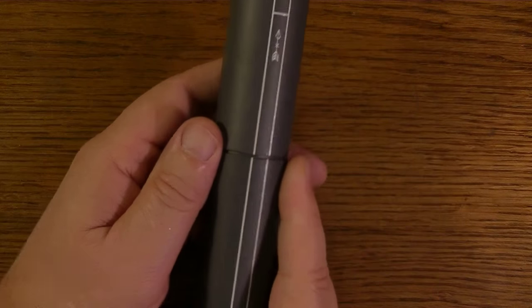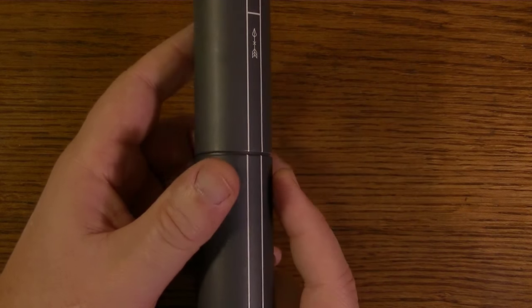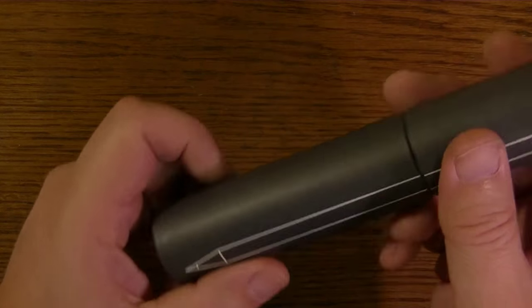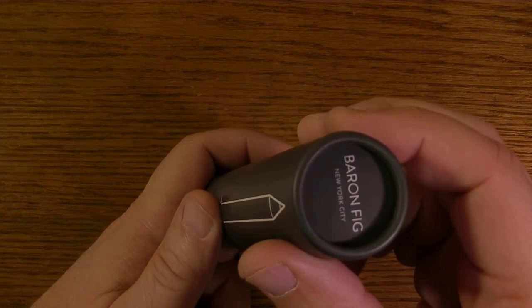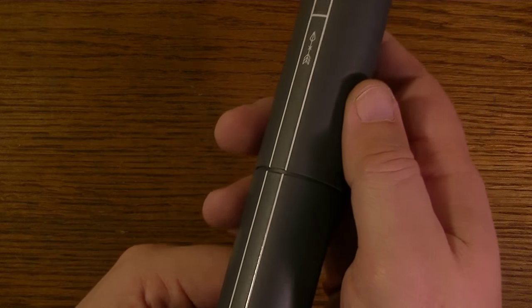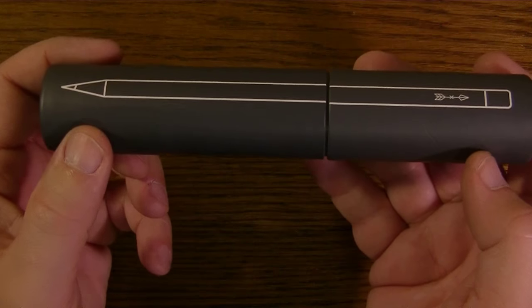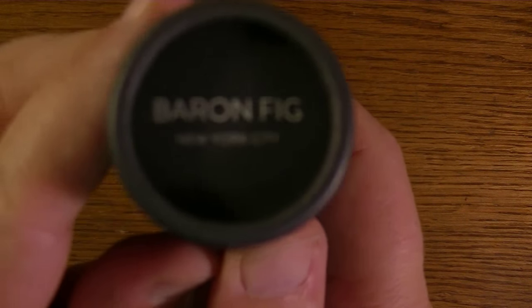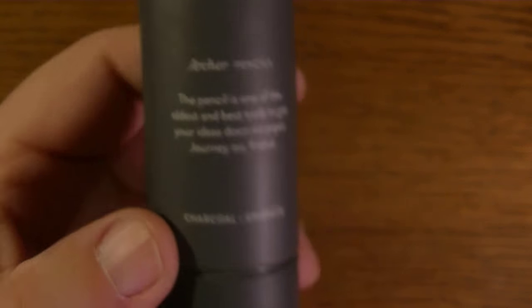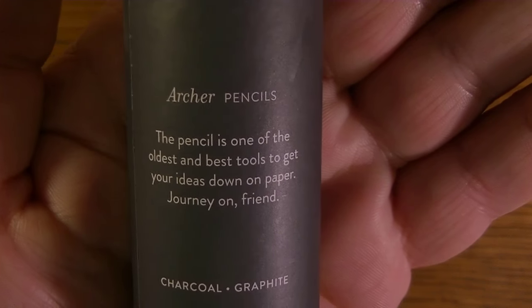Now these just came in. I ordered them from Baron Fig. They're in New York City and it comes in this grayish, I guess graphite colored cylinder, which I think is pretty nifty for a pencil case. Of course, we've already seen the Baron Fig New York City. That's where they're from. And they're called Archer pencils.